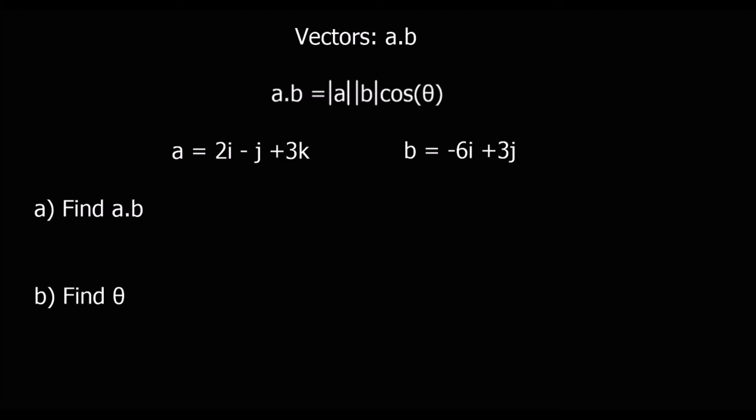This video is about a·b, or the scalar product of two vectors. a·b is mod a — the magnitude of a — times mod b — the magnitude of b — times cos theta, where theta is the angle between the two vectors.